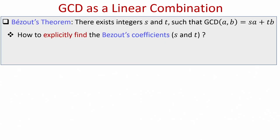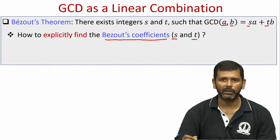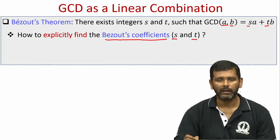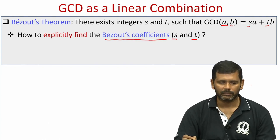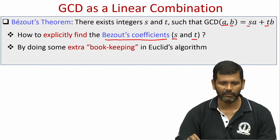The next interesting question is: how exactly do we find those integer linear combiners? Running Euclid's algorithm finds the GCD, but if I also want the integer linear combiners guaranteed by Bezout's theorem, how exactly can I find them? You might wonder why we are interested in these combiners — they are called Bezout coefficients, and they will be very useful later when we discuss modular multiplicative inverse.